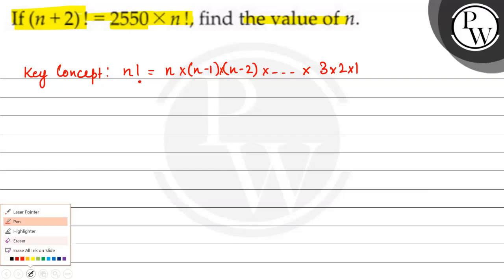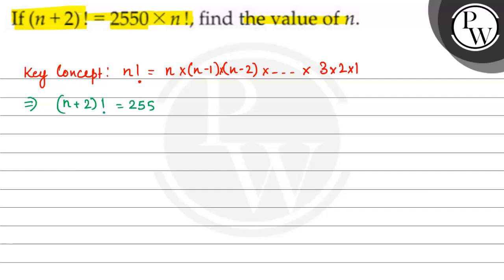In this specific question, what is given? n plus 2 factorial is equal to 2550 multiplied by n factorial. So if I expand this completely, how do I open n plus 2 factorial? n plus 2 subtract 1, which gives n plus 2 minus 1, which is n plus 1 multiplied by n factorial.